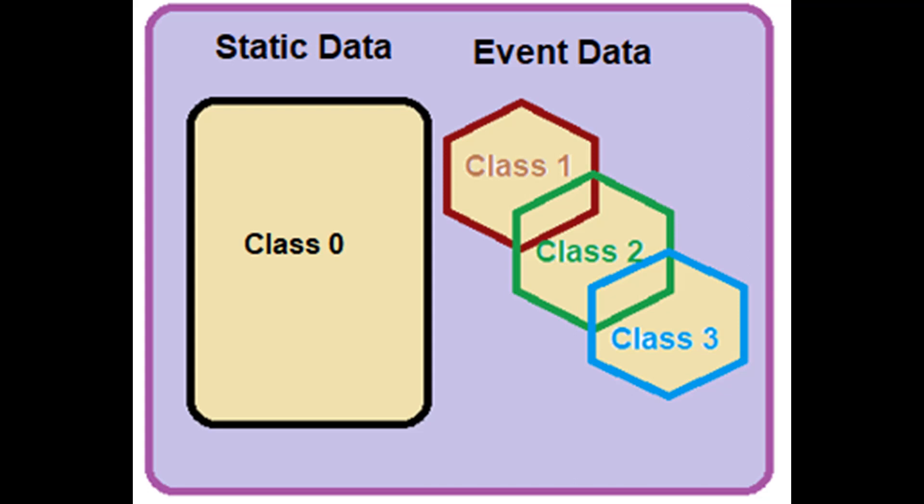DNP3 supports four classes: zero, one, two, and three. Class zero is the static class; classes one, two, and three are event classes. A master may ask for input data based on class — in fact, this is the most common way of getting data from an outstation. All static object groups belong to class zero, so a master can get the static value of all points by reading class zero. Each object that can report events is assigned to class one, two, or three. The master can get all events by issuing a single read for classes one, two, and three. More details will be presented in future lessons.